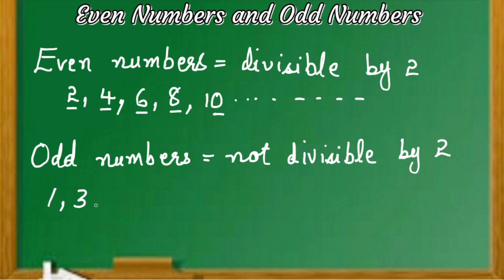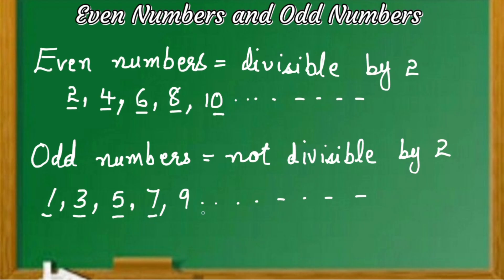For example, 243. Here, the unit digit is 3, which means the whole number 243 is an odd number. So, all the numbers that end with a unit digit of either 1, 3, 5, 7, or 9 are called odd numbers, and they cannot be divided by the number 2.